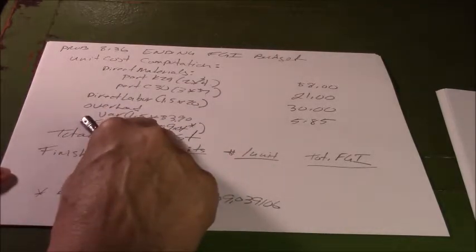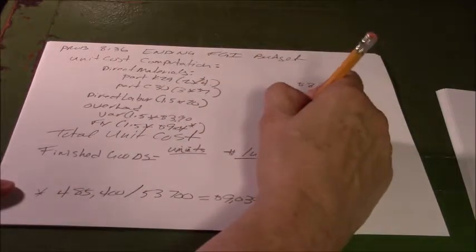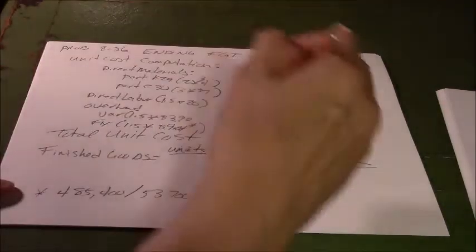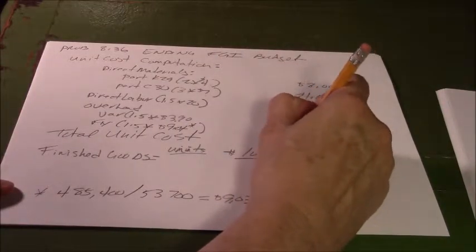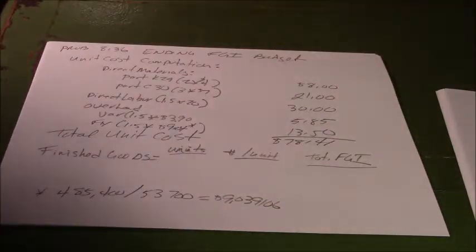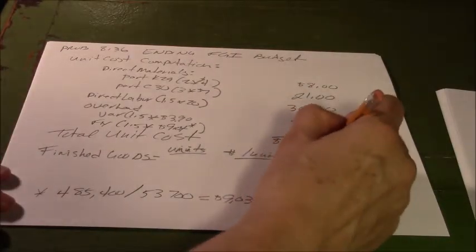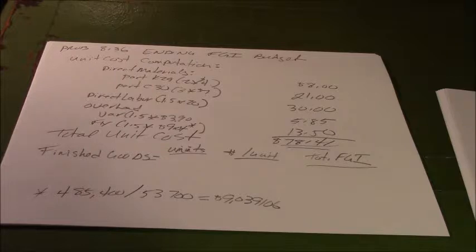So our total unit cost is $78.41 per unit. So to make a harness it costs $78.41. That's great - we can use that to figure out our ending inventory.